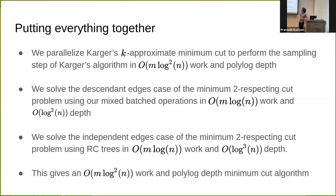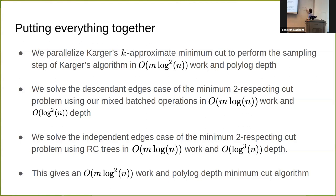Karger's contraction gives a k-approximation, and the work to achieve it is roughly m · n^(2/k) · log n. We used it to get a log n approximation. Setting k to a constant would give m · n · log n work, which is too much — so the log n approximation is the best useful application here.